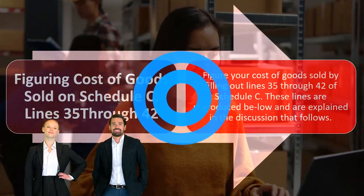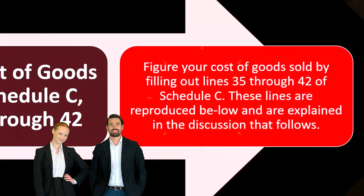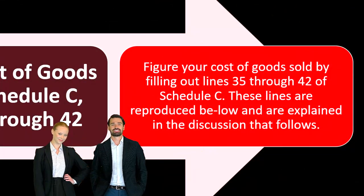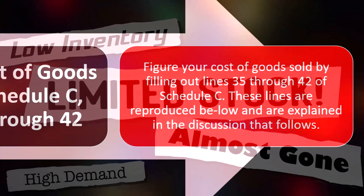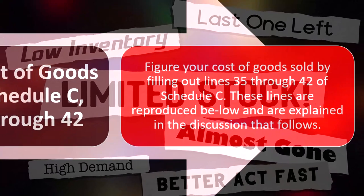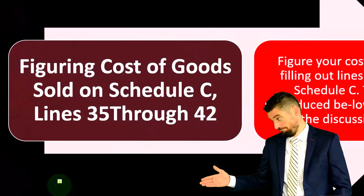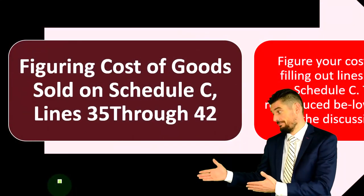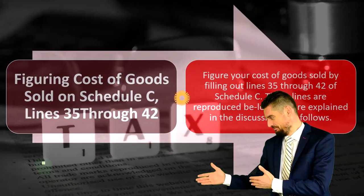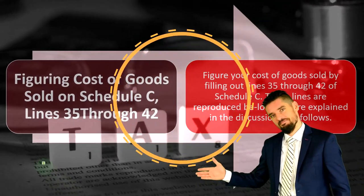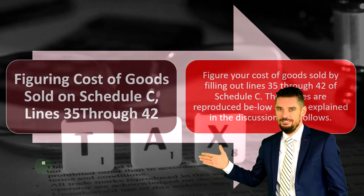For income taxes, you'll deal with Schedule C and its cost of goods sold schedule, lines 35 through 42. This is essentially a cost of goods sold calculation similar to a periodic inventory system: beginning inventory — which should match the ending inventory on the prior year's tax return — plus purchases, minus ending inventory, gives you the cost of goods sold.